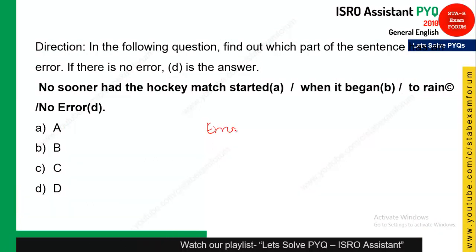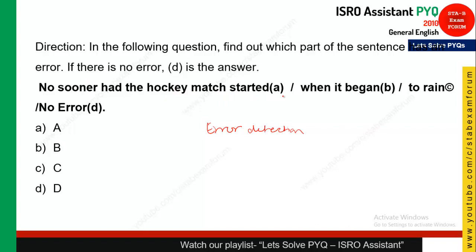This question is from error detection. The statement is: 'No sooner had the hockey match started when it began to rain.' The error is the word 'when' — it should be 'then.' The correct form is: 'No sooner had the hockey match started than it began to rain.' So option B should be the correct answer.